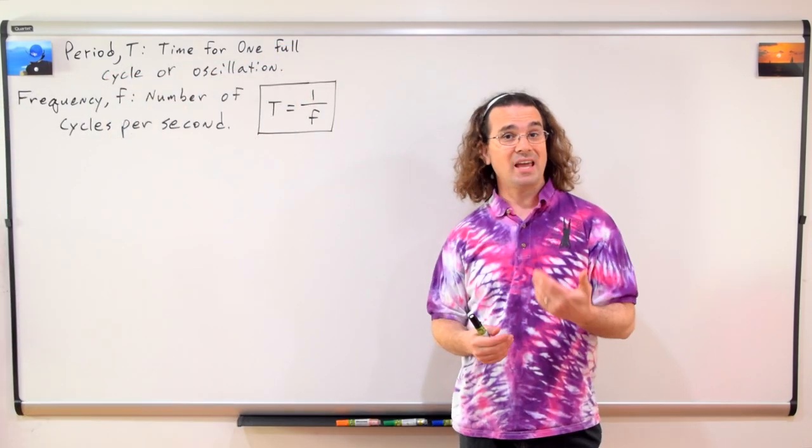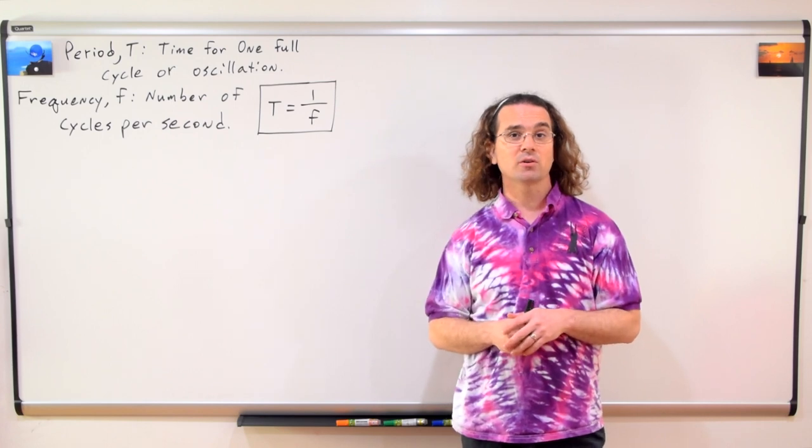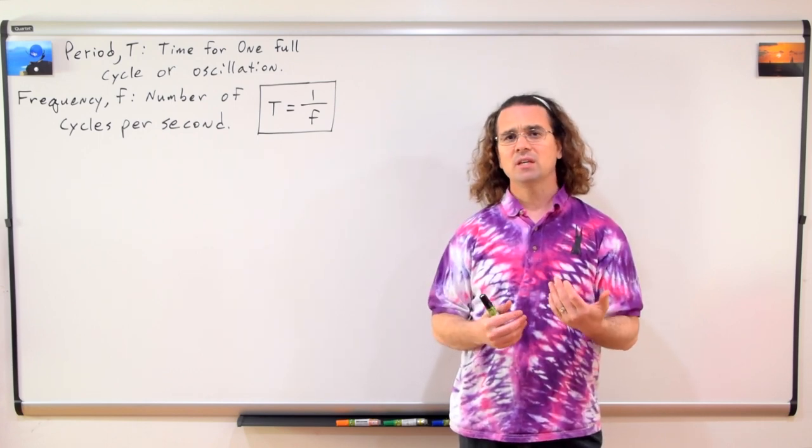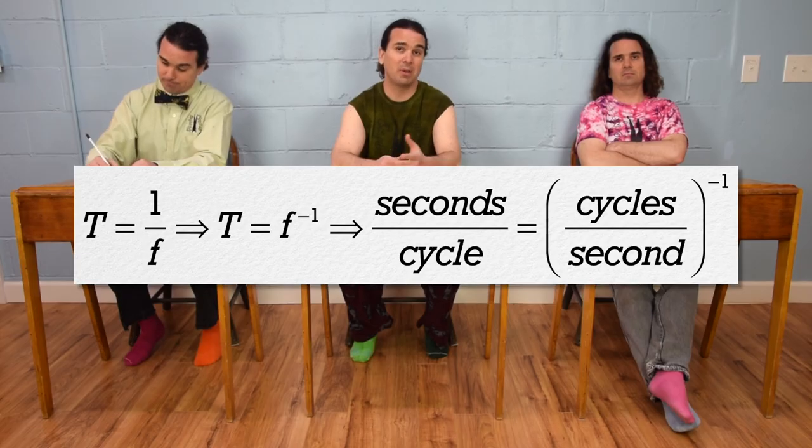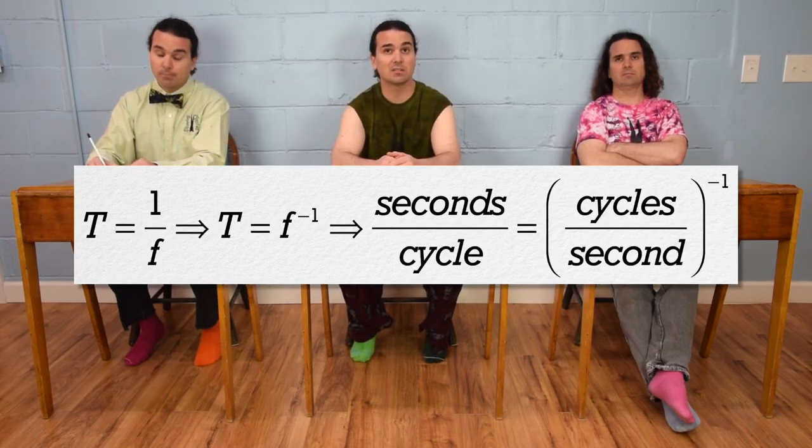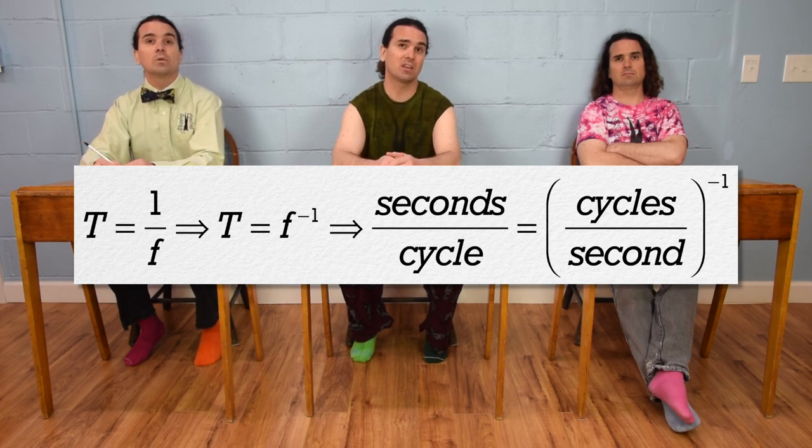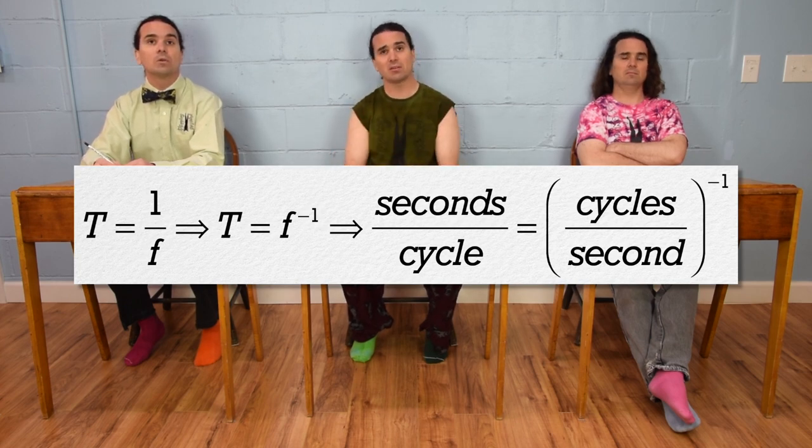Frequency, or lowercase f, is defined as the number of cycles per second. That means frequency and period are inverses of one another. Oh, right, because period is in seconds per cycle and frequency is in cycles per second. So if you take the inverse of one, you get the other. That makes sense.